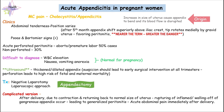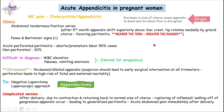The rupture of the gangrenous appendix wall due to the sudden change of the uterus will result in all the contents located in the appendix going out into the peritoneum, causing generalized peritonitis. These patients will have acute abdominal pain immediately after delivery as the uterus contracts back to normal size, rupturing the appendix. That's it for acute appendicitis in pregnant women — I hope you enjoyed, thank you.